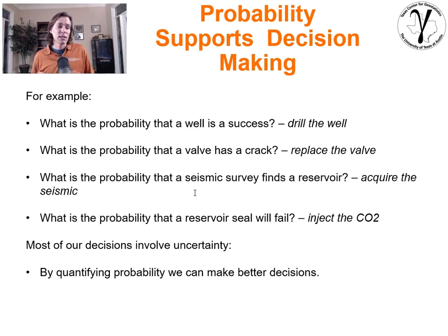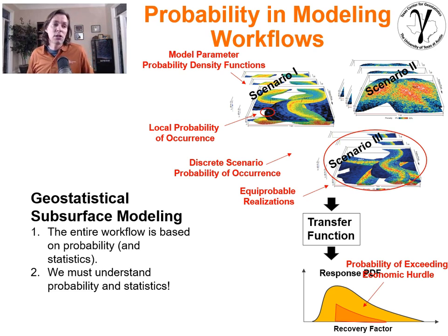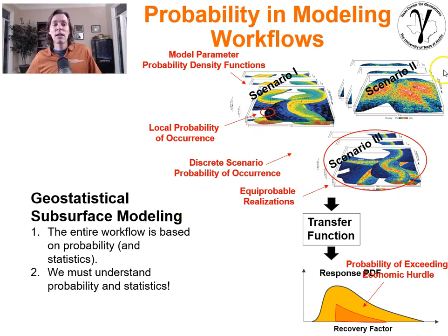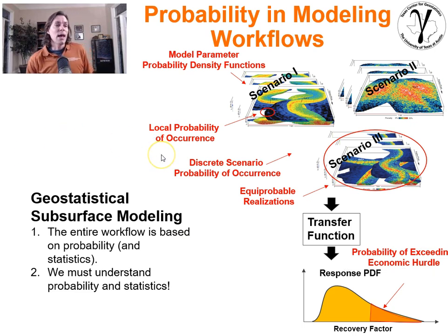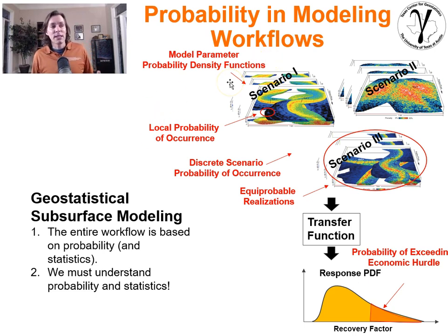If we go ahead and acquire a seismic survey, we would want to know the probability of that survey identifying a reservoir, or maybe some important features about the reservoir. That is the value of information of the seismic — it can allow us to make a good choice about whether or not we go ahead and acquire that survey. Most of our decisions in the subsurface have uncertainty, often large degrees of uncertainty. By quantifying probability, we can make better decisions.